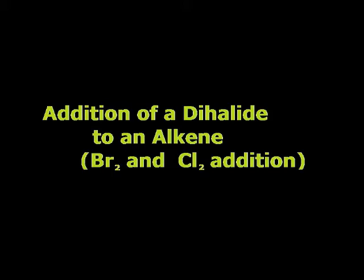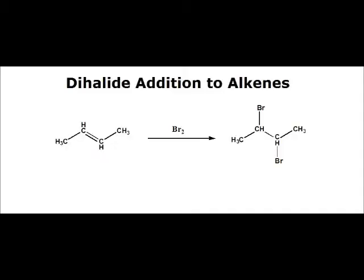When we talk about reactions of alkenes, the first one I want to go through is the addition of a dihalide. When we mention the term halide, we're talking about halogens, which are fluorine, chlorine, bromine, and iodine. We are primarily going to see chlorines and bromines added to alkenes. When we deal with the addition of a dihalide to an alkene, we're looking at the alkene adding two halogens, one to each carbon that is involved in the alkene.